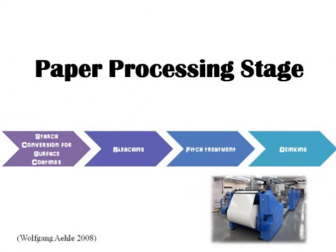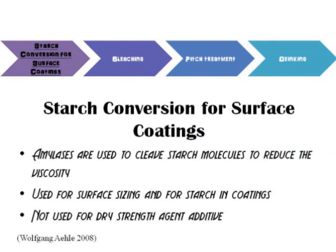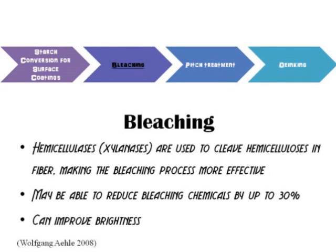There are several stages in paper processing. Firstly, starch conversion is done for the surface coatings of the paper. The enzyme used in this stage is amylase. Amylases are used to cleave starch molecules to reduce viscosity. They are also used for surface sizing and for starch coatings, but not used as a dry strength agent additive.